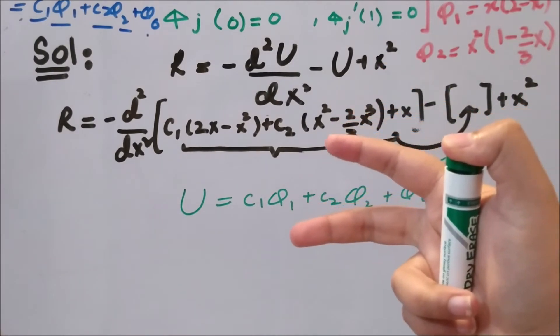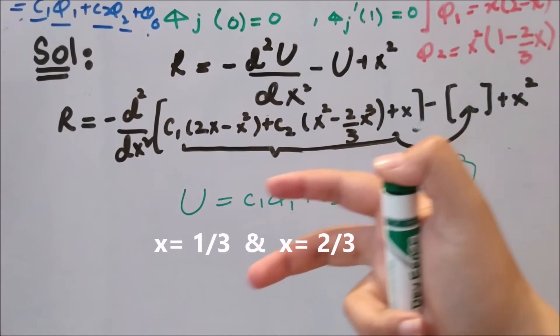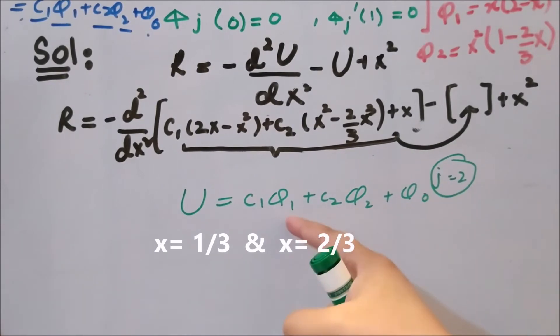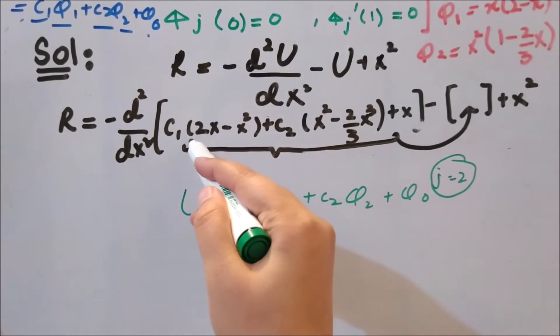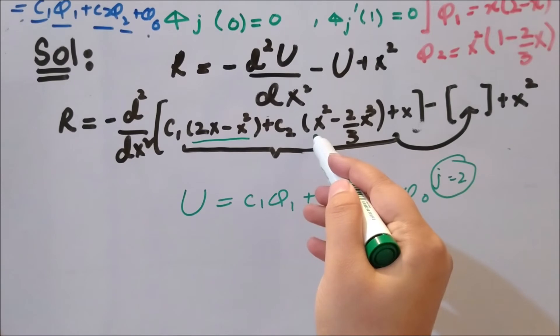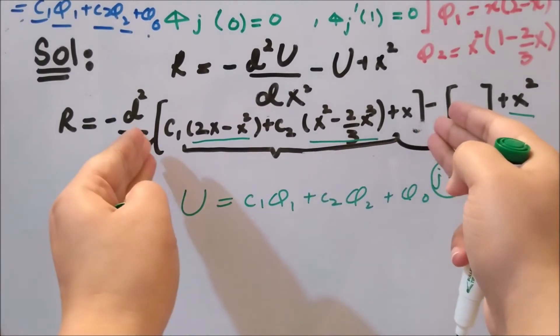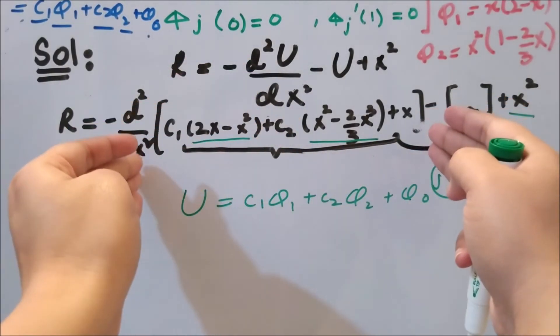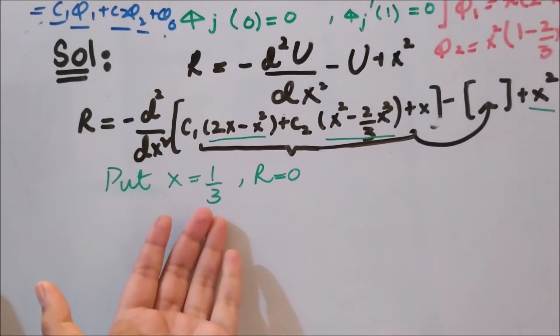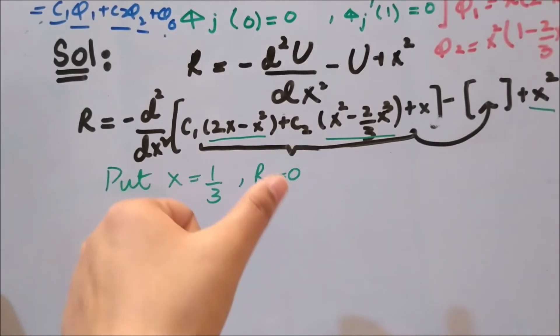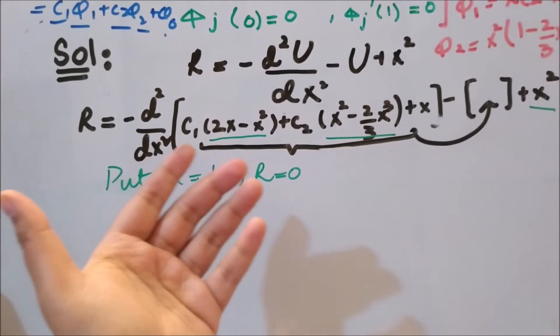That is why in the collocation method we have two collocation points: x equals one-third and x equals two-thirds. We have phi1, we have phi2, and phi0. We have to figure out c1 and c2 in order to complete the approximated function U. This is phi1, this is phi2. This whole U because the derivative, the second derivative of u here minus u and plus x squared.